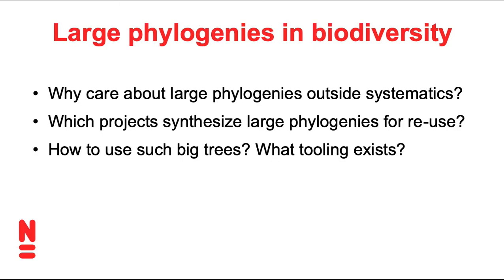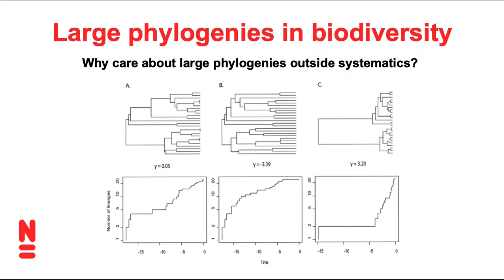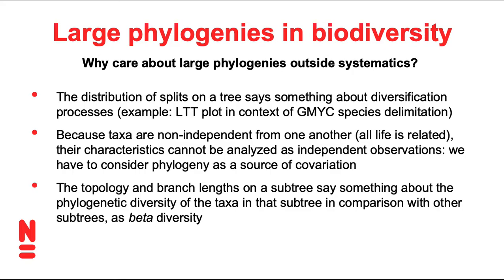As a quick recap, I will reiterate why we would care about large phylogenies at all outside of the realm of systematics. Such large trees tell us something about the process of diversification — how biological diversity accumulates over time. We looked very briefly at this in the context of species delimitation and the accumulation of lineages, for example when we work with the GNYC species delimitation algorithm.